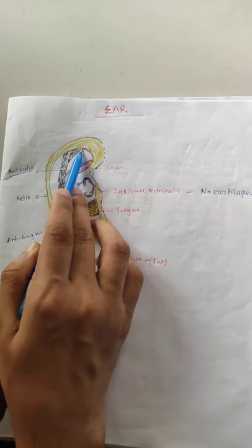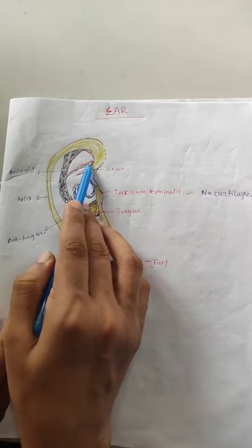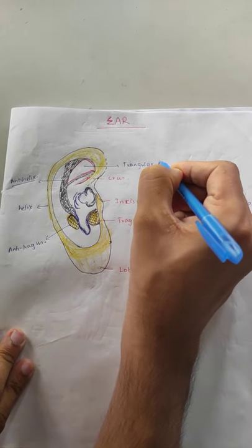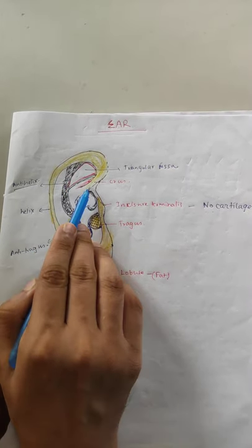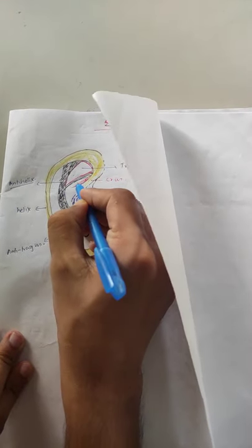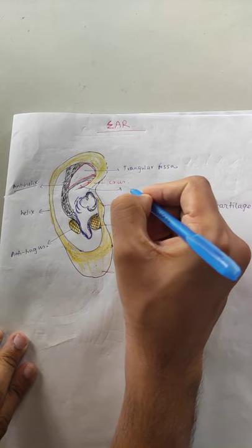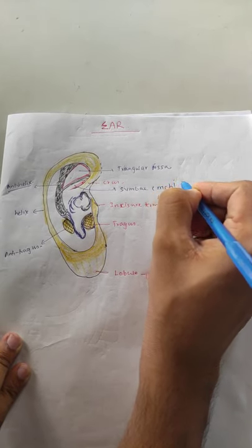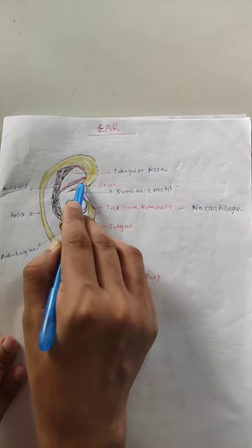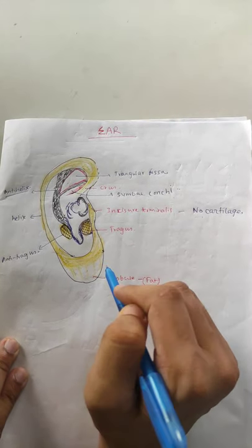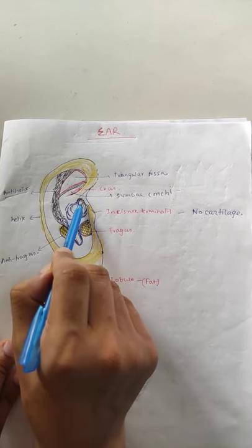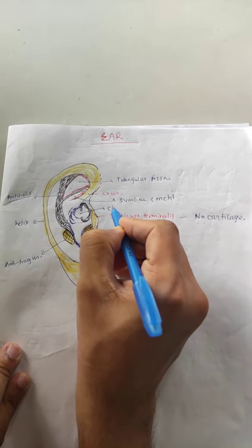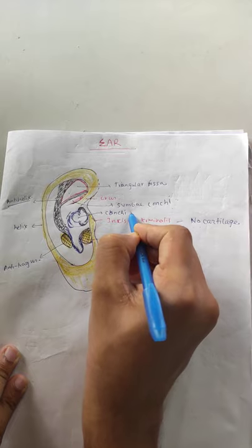The opposite of the Tragus is the Antitrагus. The elevated ridge opposite the Helix is the Antihelix. In between the Antihelix and the Helix is a depressed area called the Triangular Fossa. The depressed area above the crus is called the Cymba Conchae.